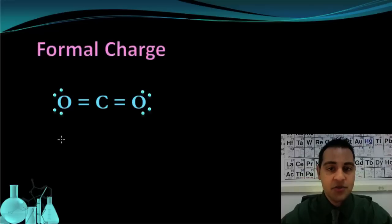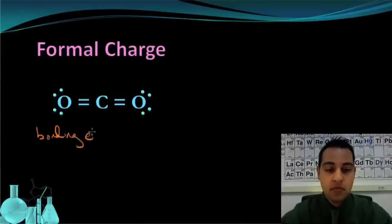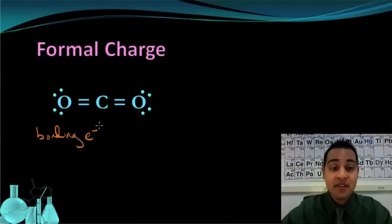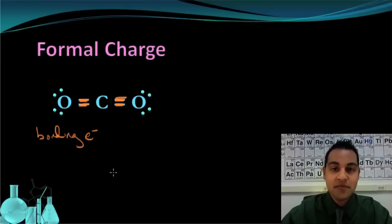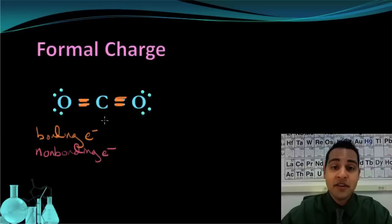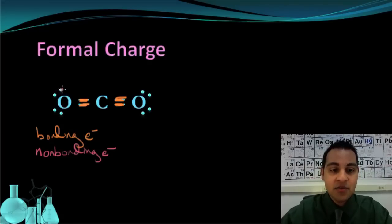Before we look at how to find formal charge, there are two terms to be familiar with. First, bonding electrons are simply the electrons we find in bonds — two in each bond. The next thing to look at are non-bonding electrons, which are exactly what they sound like: the electrons that are not in bonds, such as the lone pairs on the oxygens.